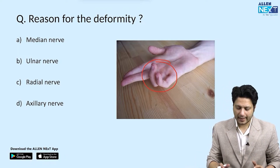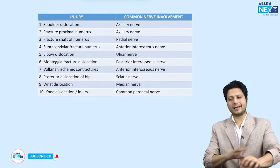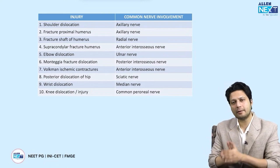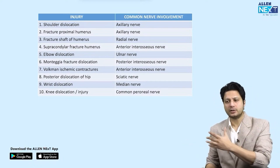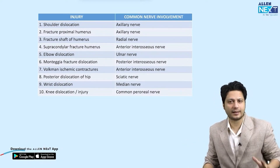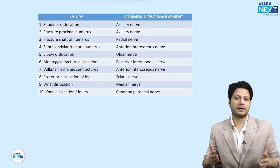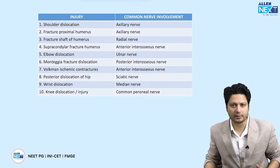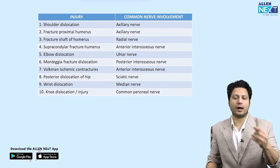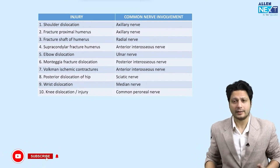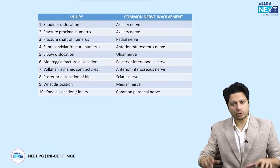For fracture-related nerve injuries: instead of a written question, they may give you an X-ray. A proximal humerus fracture or shoulder dislocation on X-ray → axillary nerve injury. A supracondylar fracture of the humerus → anterior interosseous nerve injury. A proximal fibula fracture → common peroneal nerve injury.